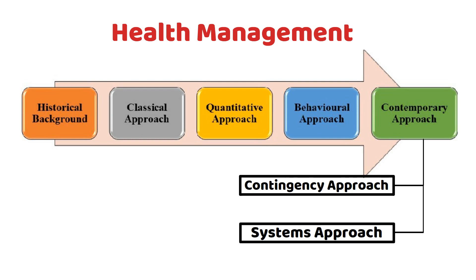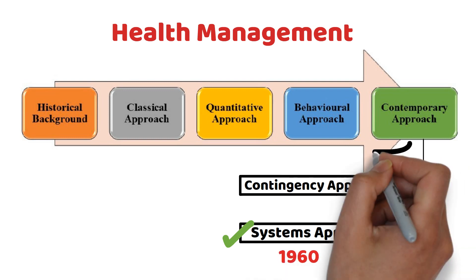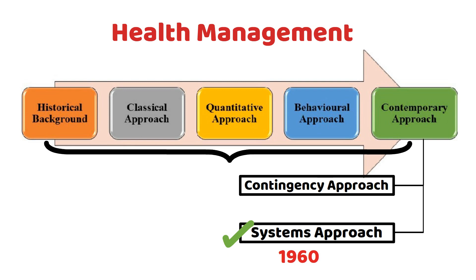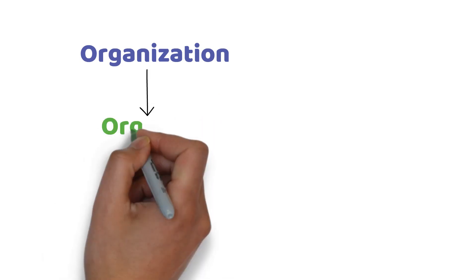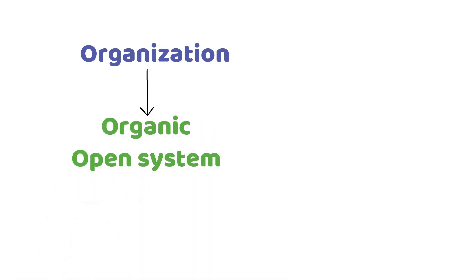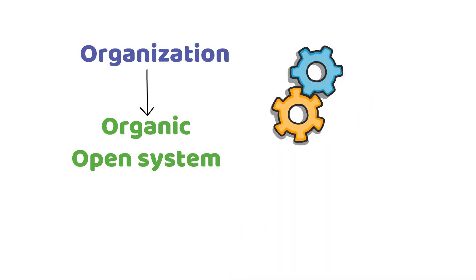In the previous session, we discussed the contingency approach to management. In this session, we will discuss the concept of the systems approach. In 1960, an approach to management appeared which tried to unify the prior schools of thought. This approach is known as the systems approach.